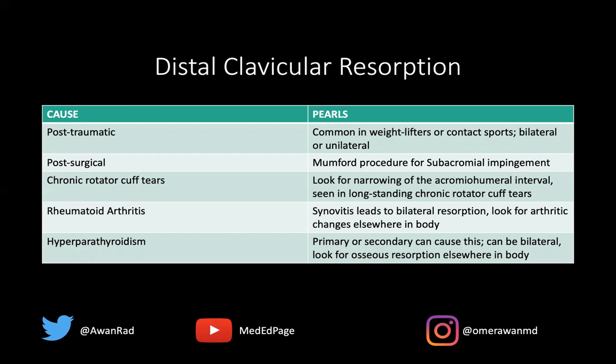And of course, hyperparathyroidism — the primary form caused by a parathyroid adenoma, or the secondary form caused by renal osteodystrophy — can result in distal clavicular resorption. Often there will be osteoresorption in other parts of the body as well, so look for that. It can certainly be bilateral in cases of hyperparathyroidism.